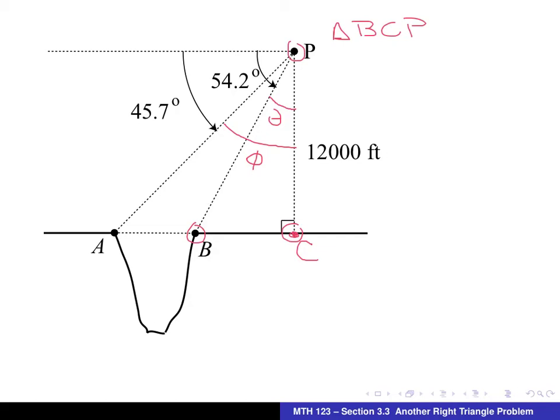What we'd like is the measure of angle theta, and we do have enough information to get that. In particular, if we take the angle of 54.2° and add theta, the result is 90 degrees. See that that forms the entire right angle. So we solve that equation for theta. We subtract 54.2 from both sides of the equation, and the result for that...